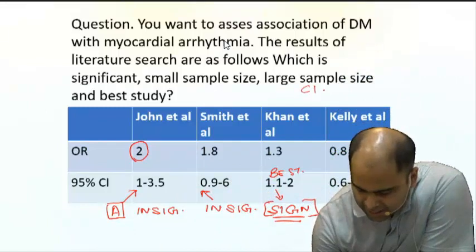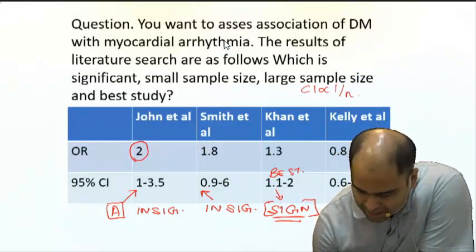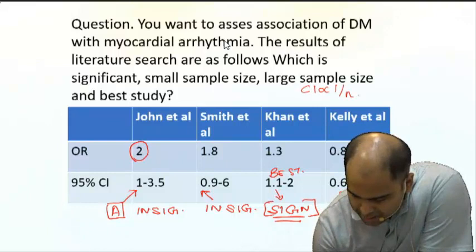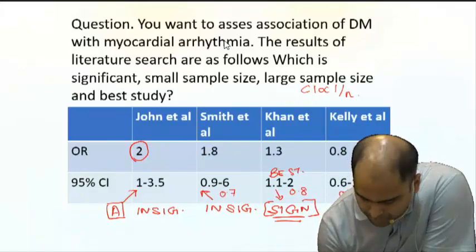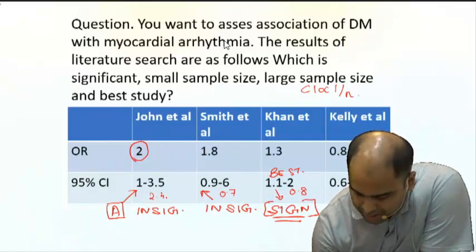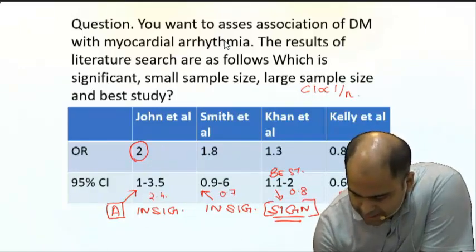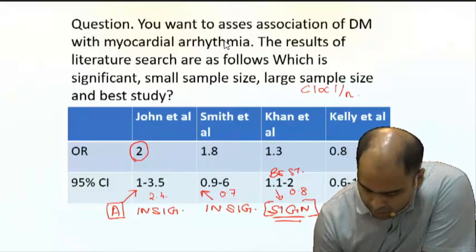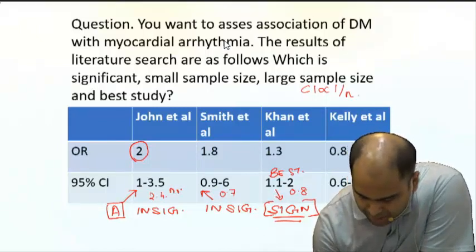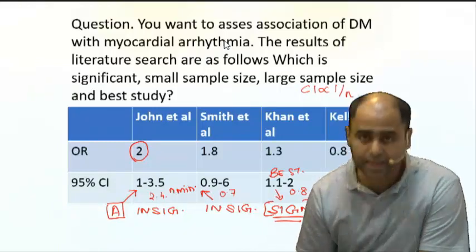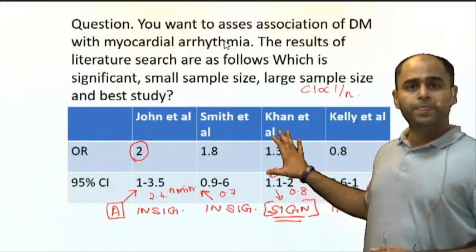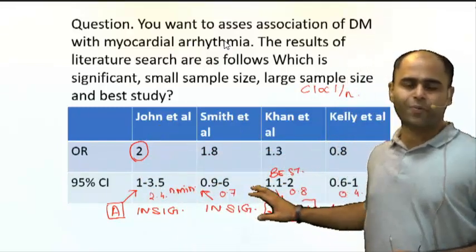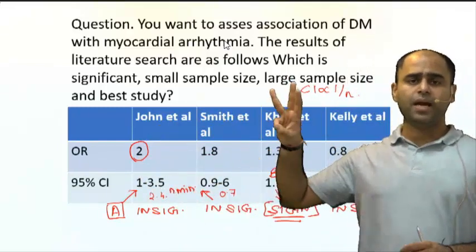Now let us look at sample size. CI is inversely proportional to sample size. Looking at the CI widths: 0.4, 0.8, 0.7, and 2.4. The smallest CI is with Kelly et al., so the maximum sample size was with Kelly et al., whereas the minimum sample size was with John et al., which had the widest CI of 2.4.